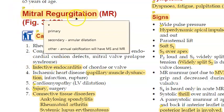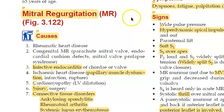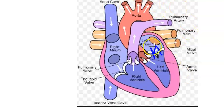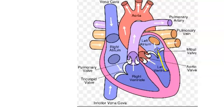In this video, let us look at mitral regurgitation, also called MR. Here is the heart, and here is the mitral valve, also called the bicuspid valve. Basically, in mitral regurgitation, blood is coming back — that is why it is called mitral regurgitation.